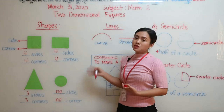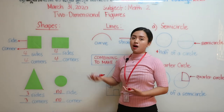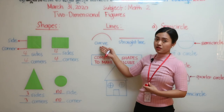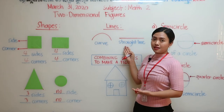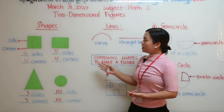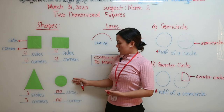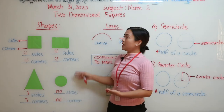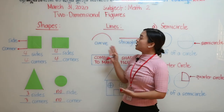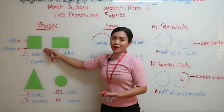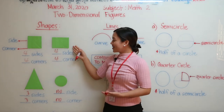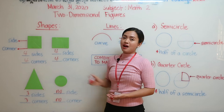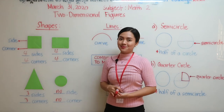Shapes consist of lines. We have two types: curve and straight line. A circle has a curve line, and square, rectangle, and triangle have a straight line.